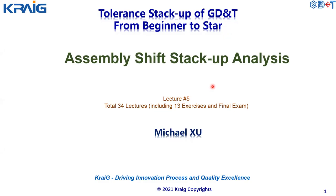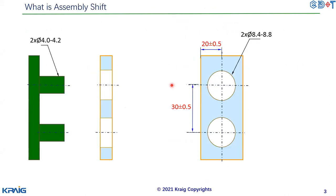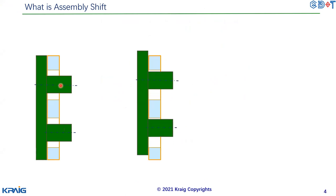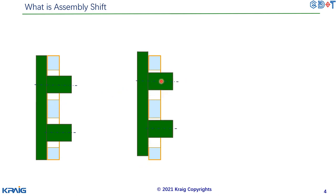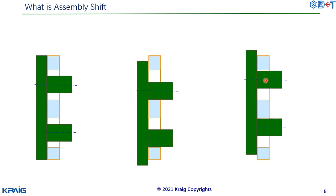Welcome to lecture 5: assembly shift in tolerance stack-up. So what is assembly shift? Here is part number one, and here is a fastener with a hole. We need to assemble these parts to these holes. Theoretically, the fastener will be centered and normal to the holes with no shift. But during actual assembly, the parts will be tightened up with a threaded bolt, and it may not be centered in the hole — the fastener is off center. We call this assembly shift.